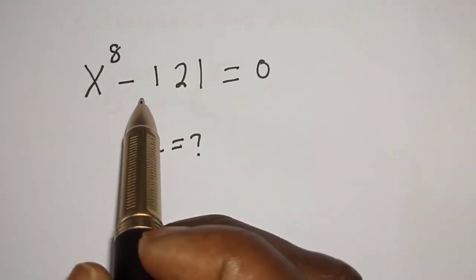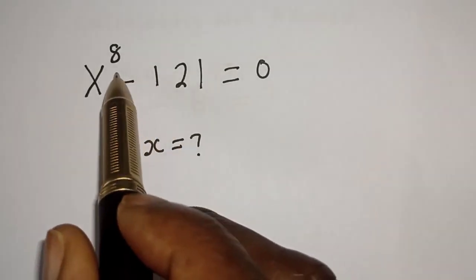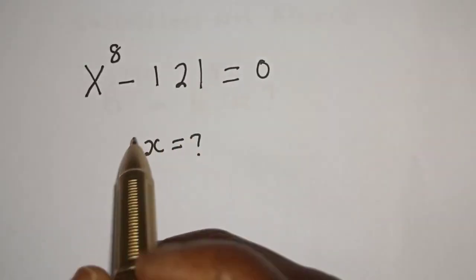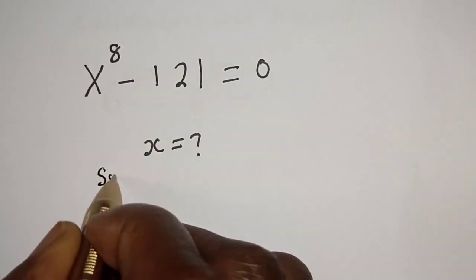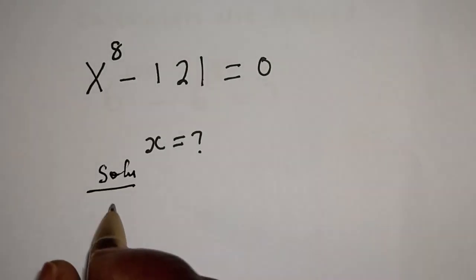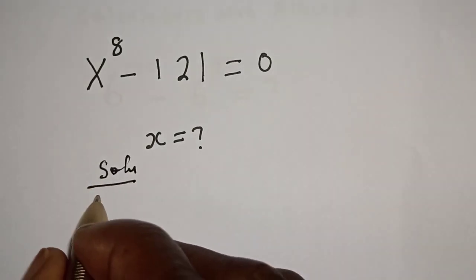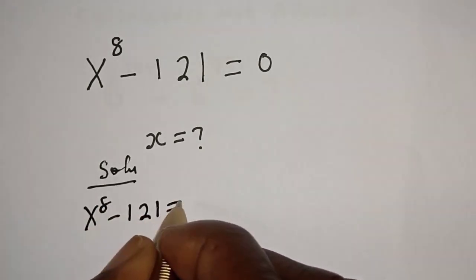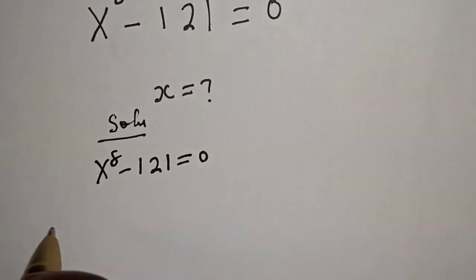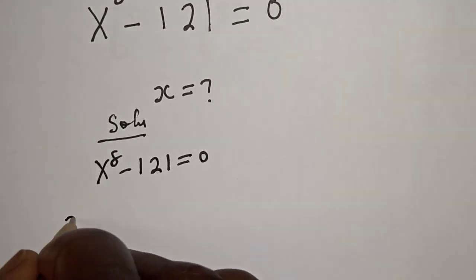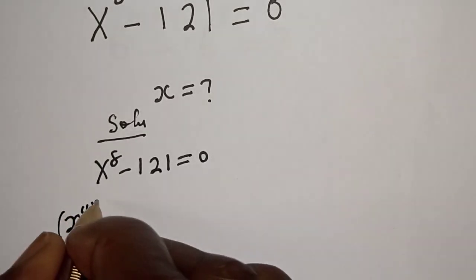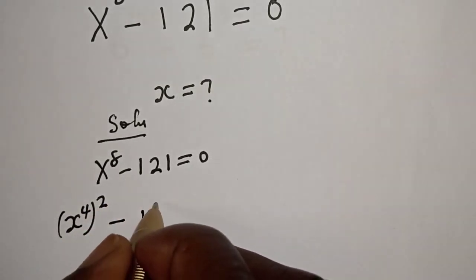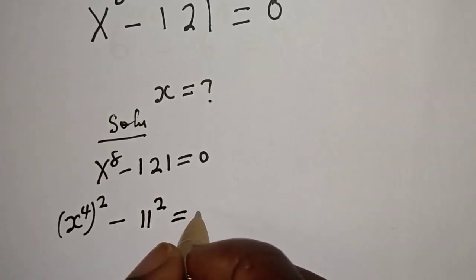Hello, welcome to MathFocus. How to find the value of s from this equation: s raised to power 8 minus 121 is equal to 0. Solution: s raised to power 8 minus 121 is equal to 0.